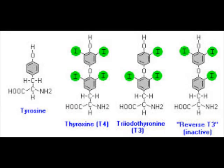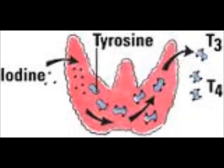In the colloid, iodine joins with tyrosine that is separated from thyroglobulin. One molecule of iodine joining one molecule of tyrosine is known as mono-iodotyrosine (MIT). Two molecules of iodine with one tyrosine is di-iodotyrosine (DIT). Three molecules of iodine with one tyrosine is T3 (tri-iodothyronine). Two DIT molecules combined form T4, also known as thyroxine.